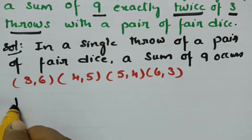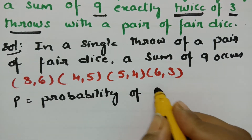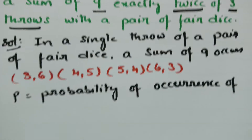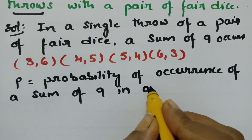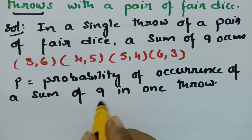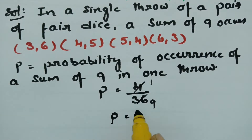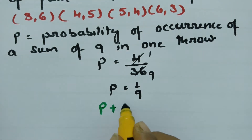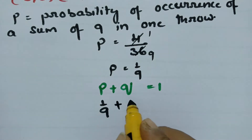Therefore, what is P? P is equal to the probability of occurrence of a sum of 9 in one throw. There are 4 possibilities out of 36. So P value is equal to 4/36, which simplifies to 1/9. The total probability states that P plus Q is equal to 1, so substituting P as 1/9: 1/9 + Q = 1.